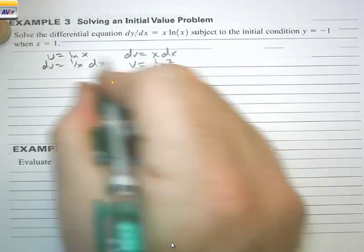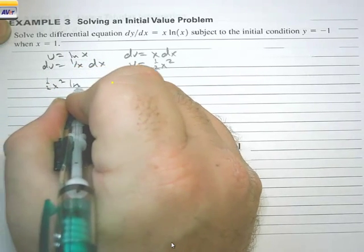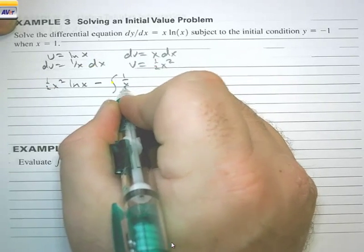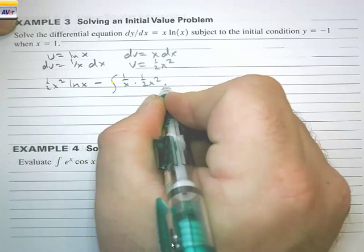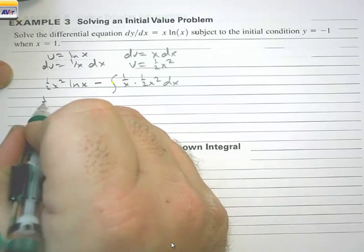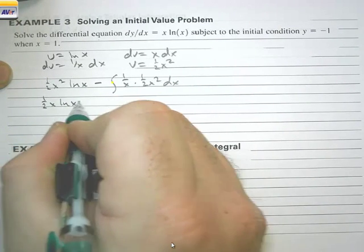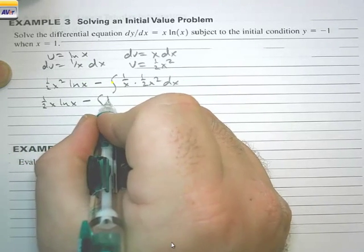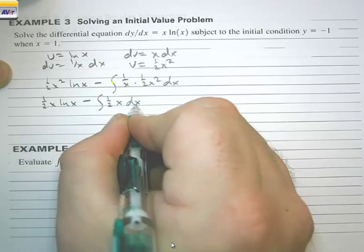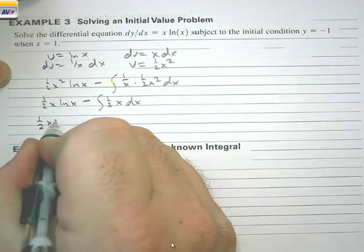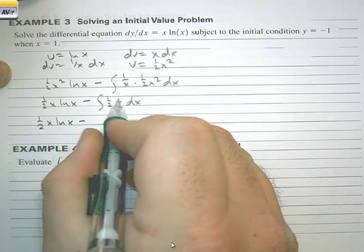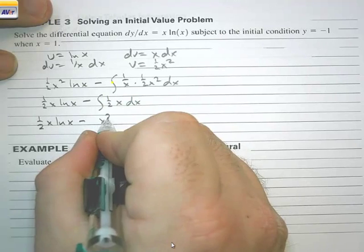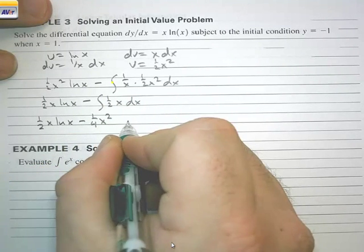Now we have u times v, which is (1/2)x²·ln(x), minus the integral of v du, which is (1/x) times (1/2)x² dx. The (1/x) cancels with x, leaving the integral of (1/2)x dx. Taking that integral, if we add 1 to the exponent we get x², so we have (1/2)x²·ln(x) minus (1/4)x² plus C.